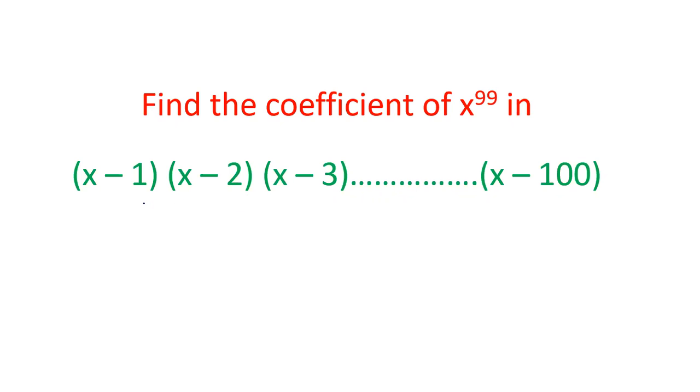a question where there are multiplication of 100 brackets given in terms x minus 1 multiply x minus 2 multiply x minus 3 up to x minus 100. We have to find out the coefficient of x power 99 in this expression.